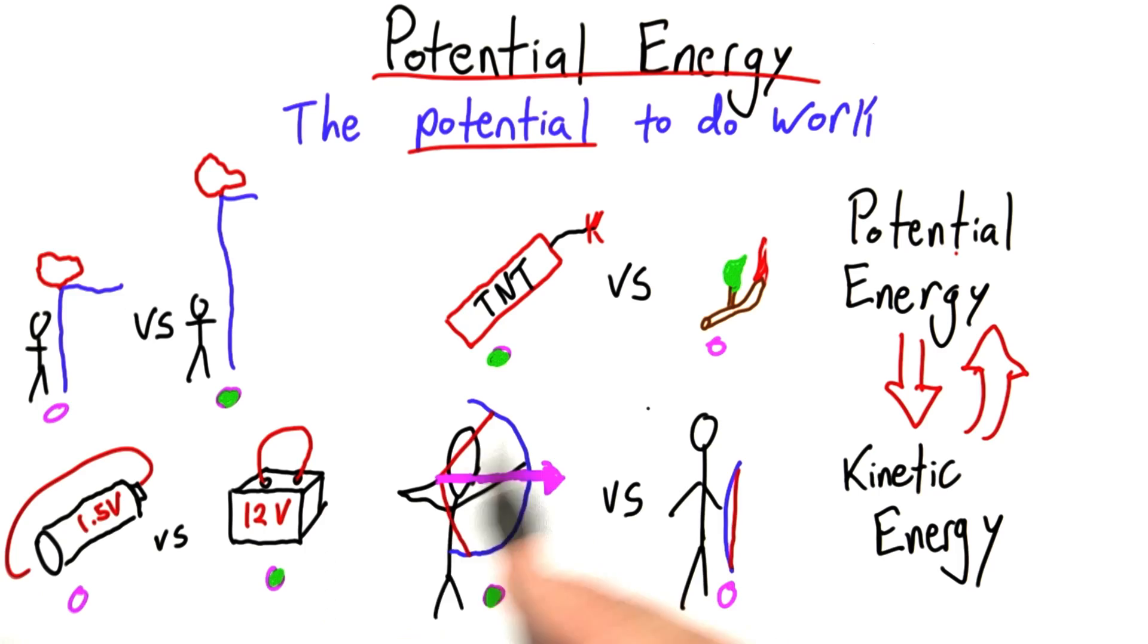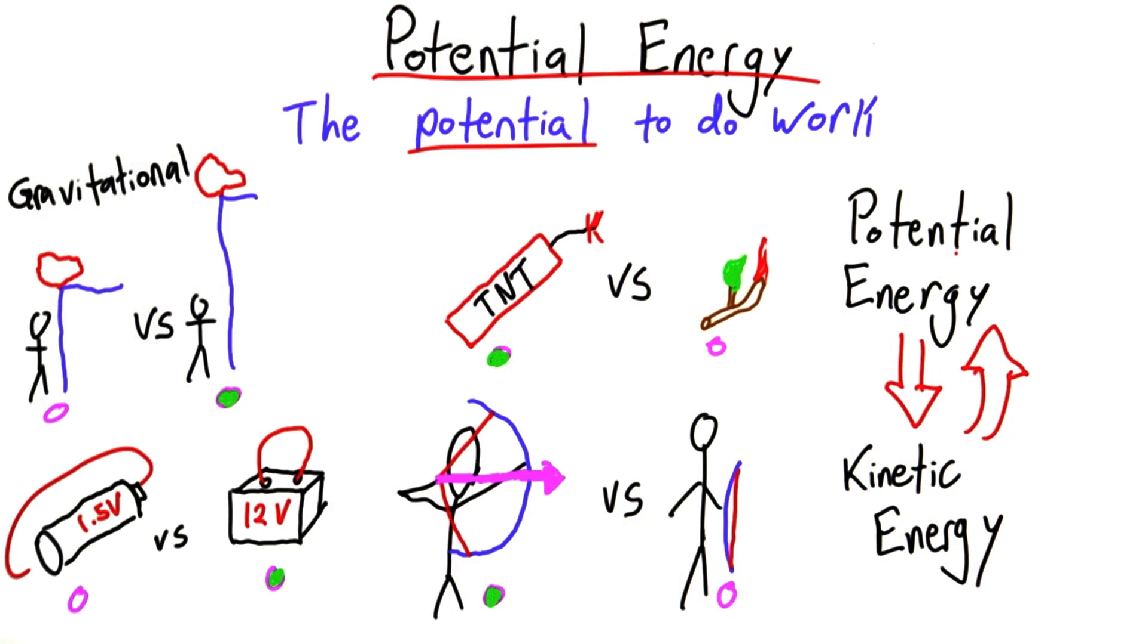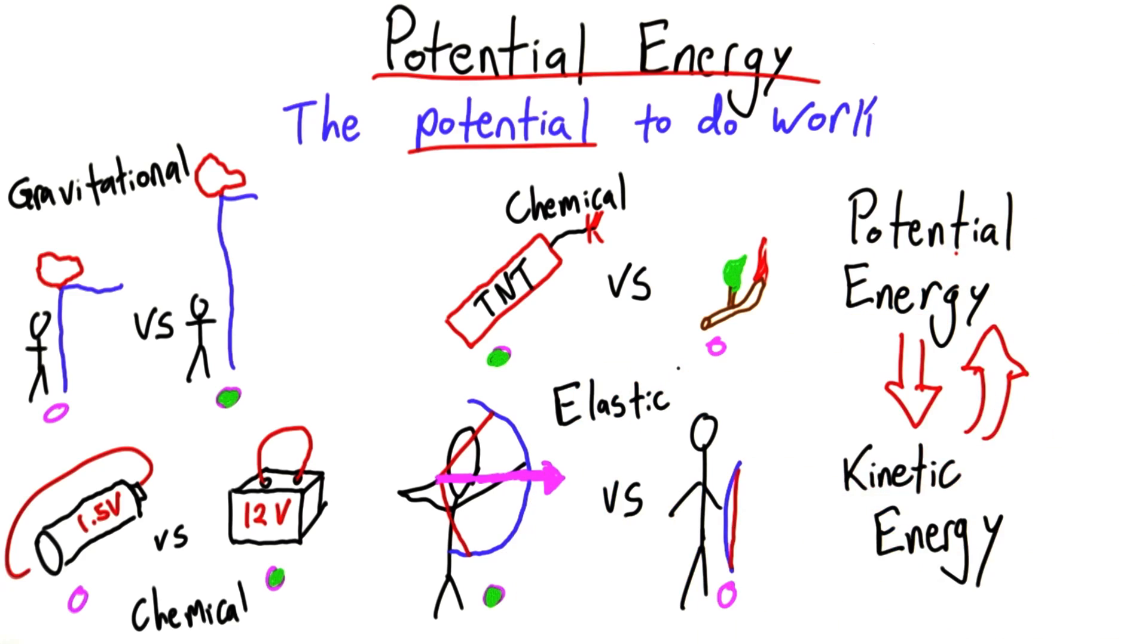Now, all of these cases exhibited a different type of potential energy. This we would call gravitational potential energy. Burning and combustion and explosion is an example of chemical potential energy, as is a battery. And a bow and arrow is an example of elastic potential energy.